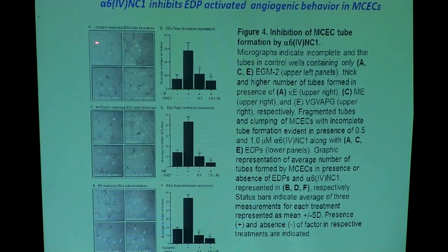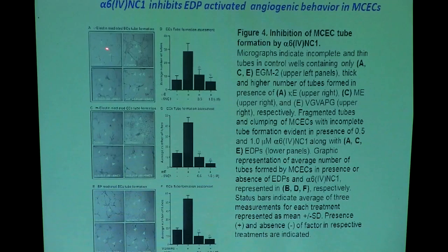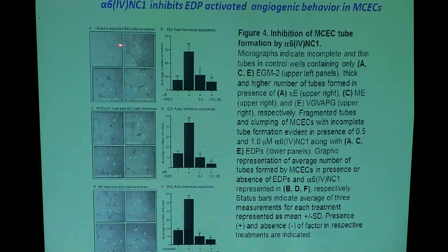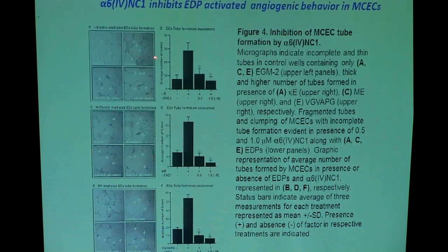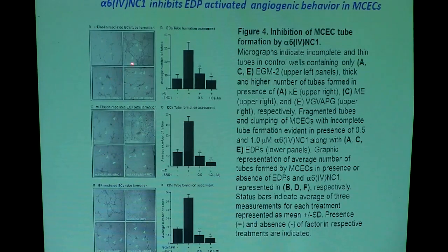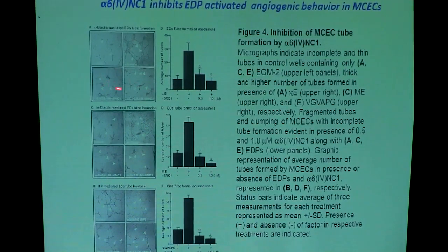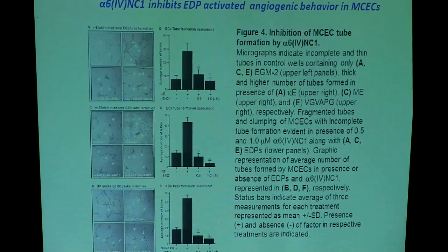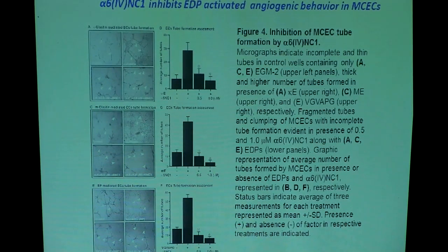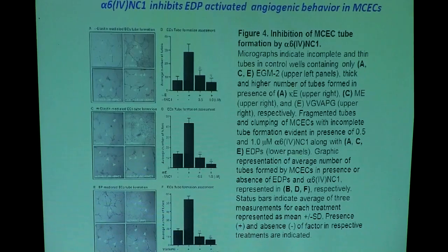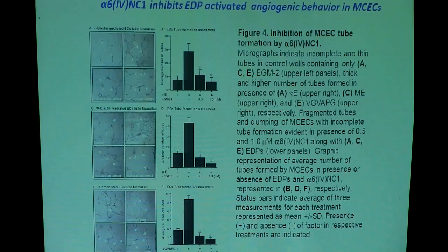Then we did a tube formation experiment. Matrigel was coated in 24-well plates, polymerized at room temperature, and endothelial cells were seeded — showing very good tube formation as control. With kappa-elastin, mouse-elastin, and bioactive peptide, our molecule at two doses broke the tubes and inhibited tube formation. These results confirm that this molecule is an endogenous angio-inhibitor, inhibiting choroidal endothelial migration, proliferation, and tube formation.